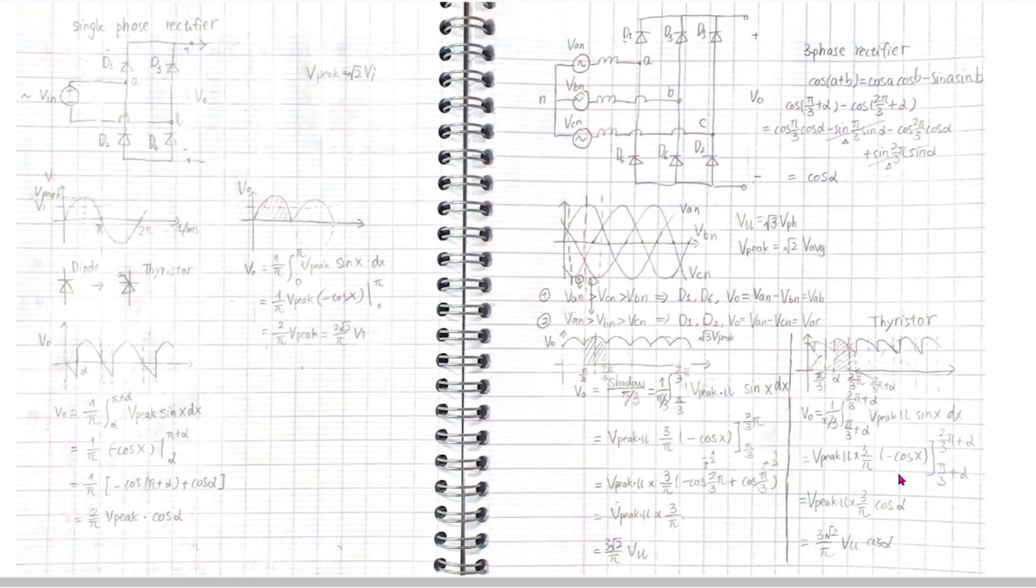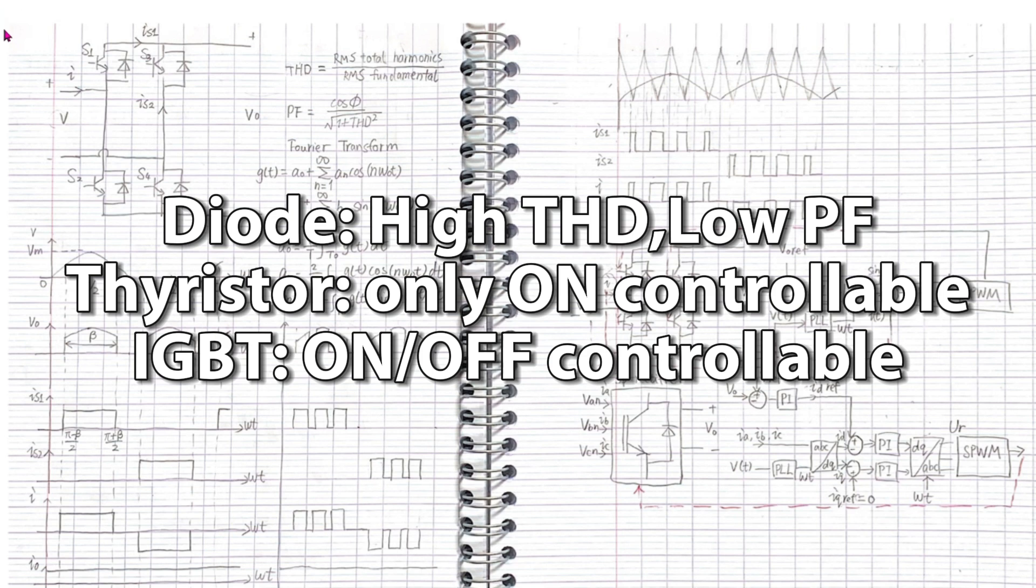The biggest weakness of the diode rectifiers is that due to the rectification, the current form is totally changed and may have lots of harmonics, thus a low power factor. Even with the thyristor, we don't have 100% control since the thyristor can only be switched on.